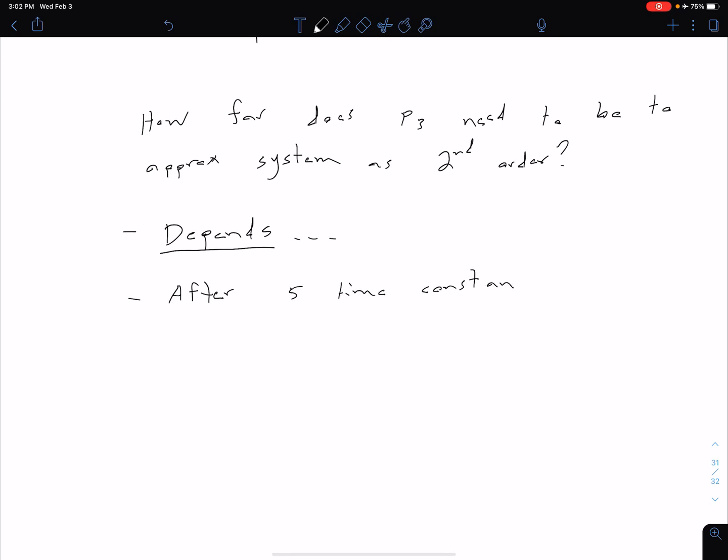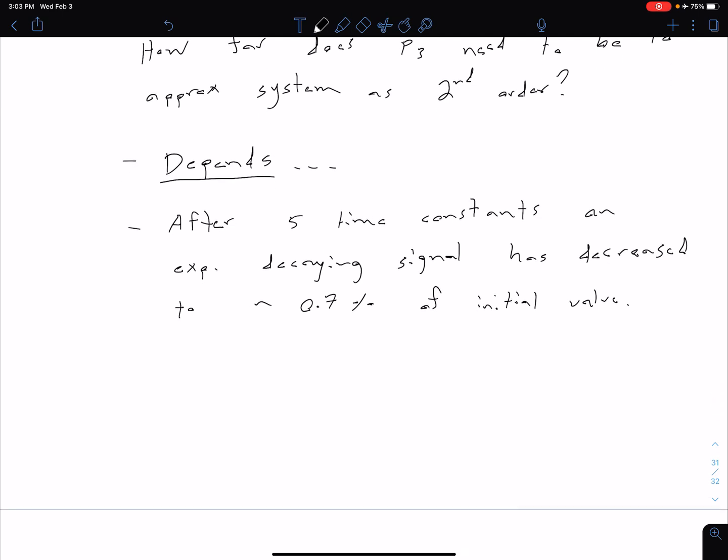Let's keep in mind that after five time constants, an exponential decaying signal has decreased to about 0.7% of its initial value. We can say that about 0.7% of the initial value is essentially zero in most cases. Because of this, a common approximation is to say if that αr, that real pole, is greater than five times the real part of our complex poles, which is ζ·ωn, then we can approximate it as a second order system. If this is true, then second order approximation is okay.